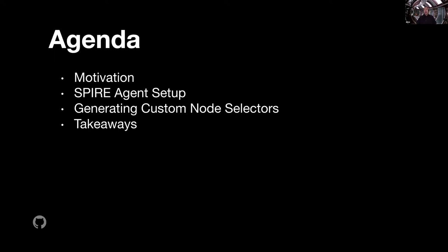The goal of this talk is to provide something of a practitioner story for a team trying to make this available internally for a company that has around 15 or 11 years of infrastructure opinion, is not fully running on a public cloud but runs on multiple public clouds, some of which may start with the letter A. I really want to talk about two implementation details of how we operate SPIRE today: how we operate our agents, and how we generate custom node selectors to support registration entries for vending SPIFFEIDs to workloads. I'll try to wrap it up with some takeaways, learnings, and outcomes.